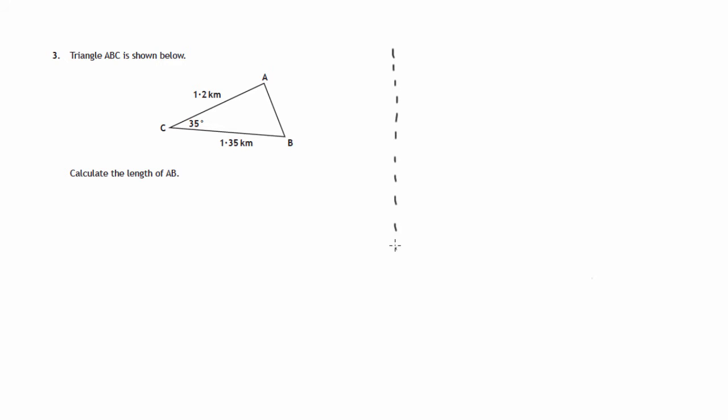If we know two of the sides and we know the angle in between, then we're going to be using the cosine rule.